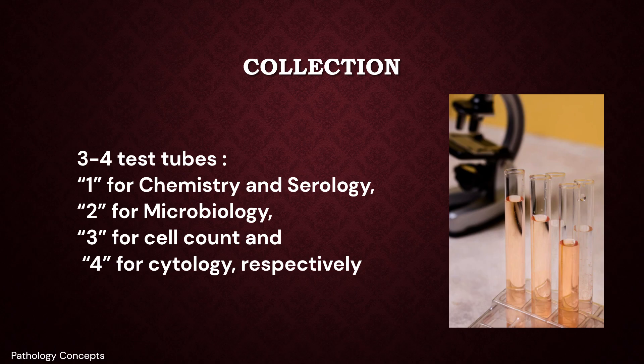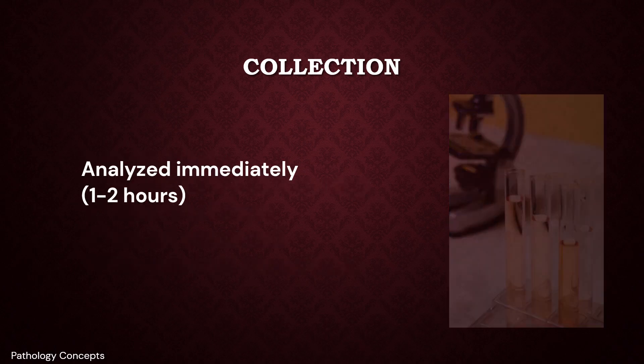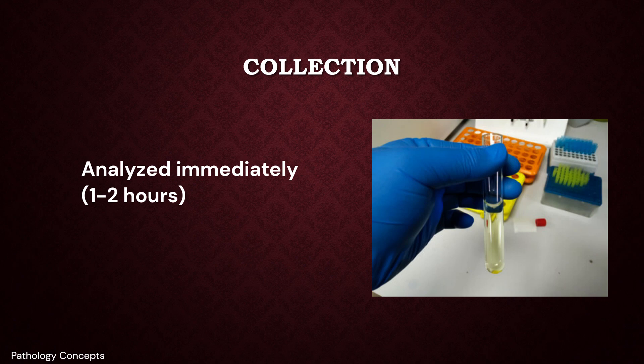Samples are usually collected in 3 to 4 test tubes, each containing 1 to 2 ml of CSF. The first test tube is used for chemistry and serology, the second for microbiology, the third for cell counting, and the fourth for cytology. Specimens must be sent to the lab and analyzed immediately within 1 to 2 hours, as cells in CSF deteriorate rapidly and chemical constituents change quickly.